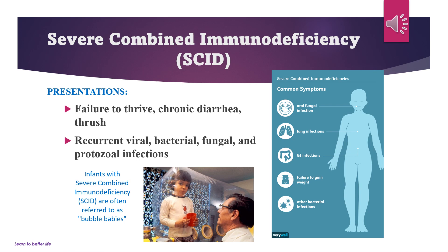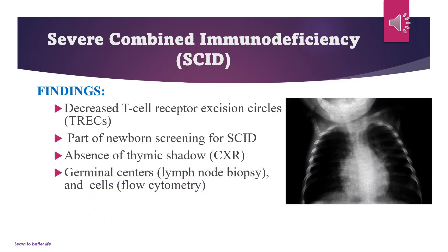Infants with severe combined immunodeficiency, SCID, are often referred to as bubble babies. Findings include decreased T cell receptor excision circles, TREC, which are part of newborn screening for SCID; absence of thymic shadow on chest X-ray; absent germinal centers on lymph node biopsy; and absent cells on flow cytometry.